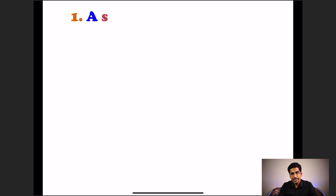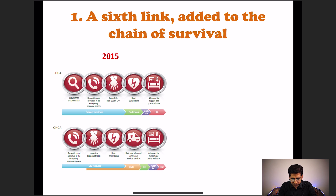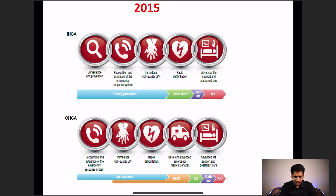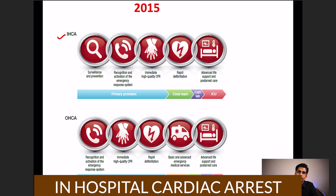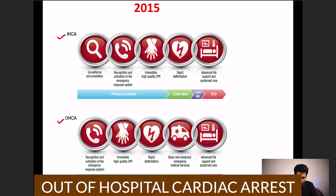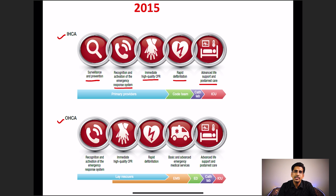The first update given by the AHA is the sixth link added to the chain of survival. In 2015, there was a chain of survival having five links. IHCA stands for in-hospital cardiac arrest, whereas OHCA stands for out-of-hospital cardiac arrest. The five links were: surveillance and prevention, early recognition and activation of emergency services, immediate high quality CPR, rapid defibrillation, and advanced life support.